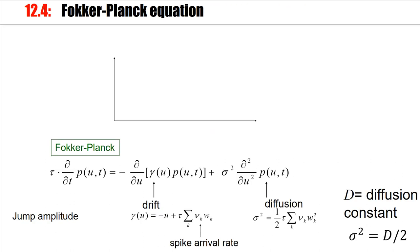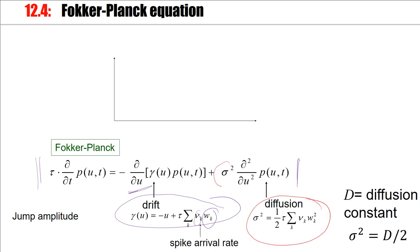To summarize: the Fokker-Planck equation has two terms. It has a first derivative, and we obtained an expression for the drift that depends on the spike arrival rate mu and the jump size. We can identify the jump size with the strength W of a synaptic weight K. There is also a diffusion term, which contributes a variance sigma squared that can be expressed by the jump size squared and is proportional to the spike arrival rate.